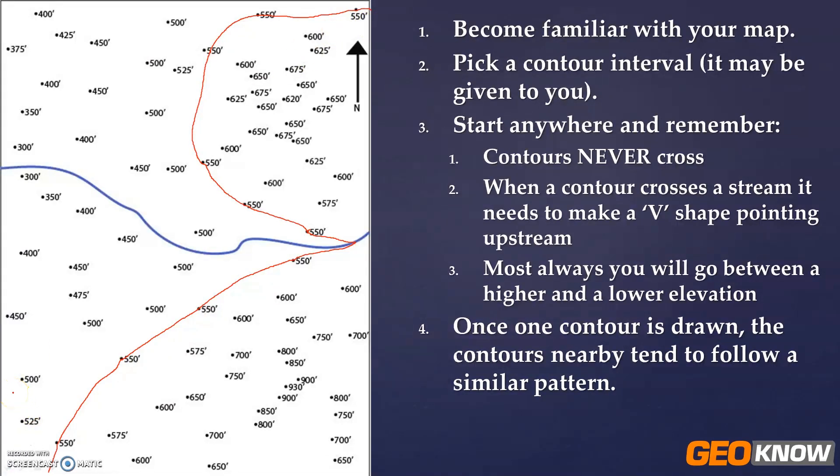The next contour we're going to do if we're working our way to the west is 500, since we're going by 50s. So we're going to go down by 50. Let's connect to our 500 just off the page. Connect to that 500. There's a lot of 500s here to help guide us.